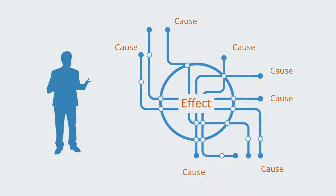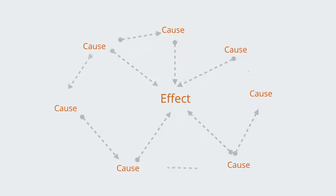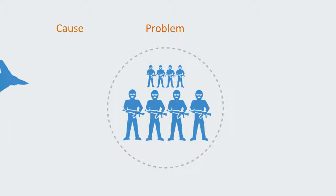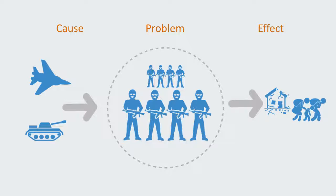Complexity management posits that most complex phenomena are the product of a number of different variables interacting in a specific non-linear fashion, where they are amplifying or dampening each other to give us the overall emergent outcome. Because no one single thing causes the outcome, we cannot simply solve the problem by affecting one input variable. For example, let's apply some non-linear thinking to our current challenge of global terrorism. A linear cause and effect approach would be to simply exert superior military force against the enemy — that cause would produce the desired outcome of eradicating terrorism.